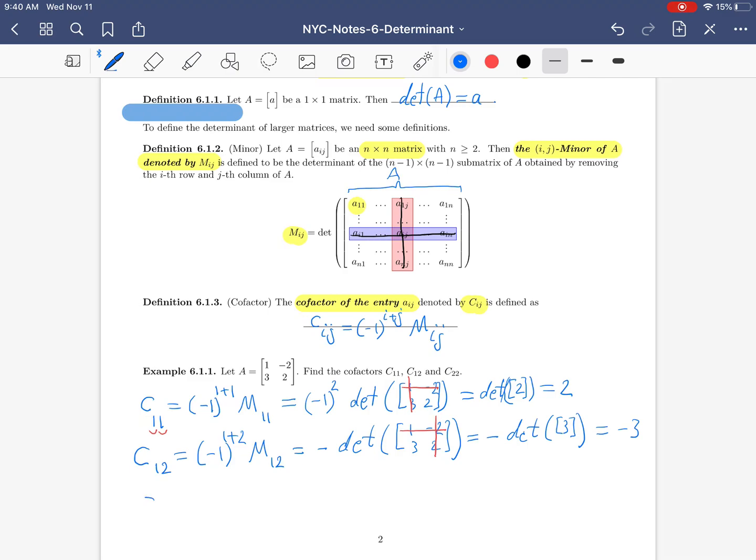And as the last cofactor we're supposed to compute, we have C_22 is negative 1 to the 2 plus 2 times M_22. Negative 1 to the 4 is positive. So we have to just compute the determinant of, copy the matrix, then we have to remove a row and a column. Which one? The second row and the second column. So this becomes 1.